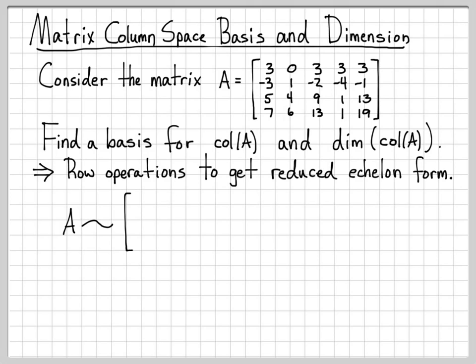If you do the row operations, you will end up with A being row equivalent. That's what this tilde means right here. It's row equivalent to this matrix right here. So if you do the row reductions, you'll end up with this.